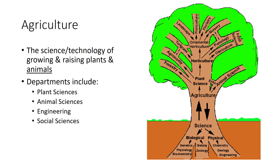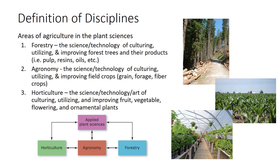Traditionally, the College of Agriculture has consisted of nine departments. However, these nine departments can be broken down into four groups—plant sciences, animal sciences, engineering, and social sciences. Agriculture includes three important areas of plant science—horticulture, agronomy, and forestry—which are interrelated because they are all applied plant sciences. However, they remain distinct from one another.